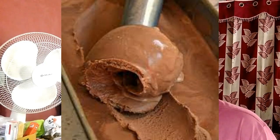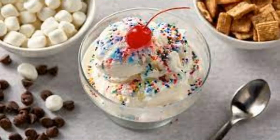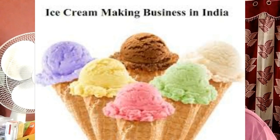What makes ice cream creamy? Most premium ice creams are 14% fat. In addition, egg yolks contain lecithins which bind fat and water together in a creamy emulsion. Air makes ice cream softer and creamier. The more air bubbles there are and the smaller they are, the smoother the ice cream will be.